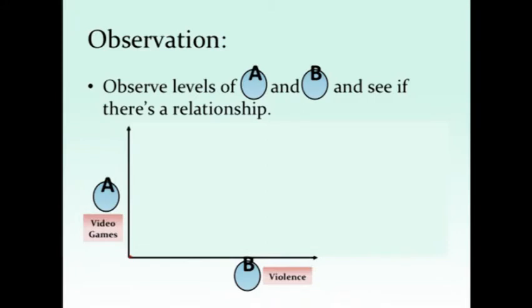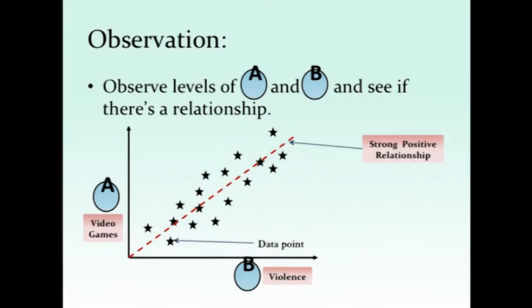If we plot that graphically, that would look something like this. You have A on the left, you have B underneath. We collect data points concerning video games and violence, for example, to put our first point up — that's one data point there. But in order to really understand the relationship between A and B, we need multiple data points.